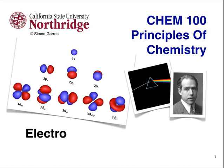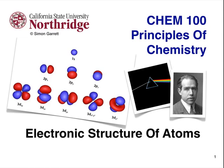Welcome to the CSUN video learning module on the electronic structure of atoms. My name is Simon Garrett. Electronic structure sounds complicated, but in this context, electronic is simply related to the number and location of electrons in an atom.